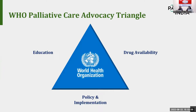The slide you are seeing right now is a WHO palliative care advocacy triangle. As per WHO, to set up a successful palliative care center or organize a palliative care service, we need to ensure three things: education, drug availability, and policy and implementation. When we talk about education, there are barriers to palliative care which must be overcome. These include lack of awareness among professionals, administrators, and the public.